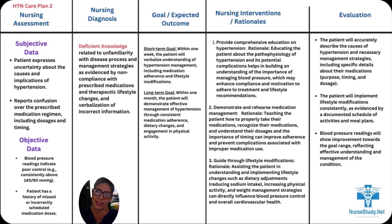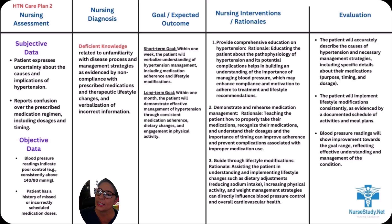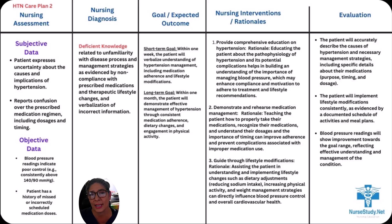Evaluation for the second care plan: The patient accurately describes the causes of hypertension and necessary management strategies, including specific details about their medications such as purpose, timing, and dosage. The patient implements lifestyle modifications consistently, as evidenced by a documented schedule of activities and meal plans. Blood pressure readings show improvement towards the goal range, reflecting effective understanding and management of the condition.